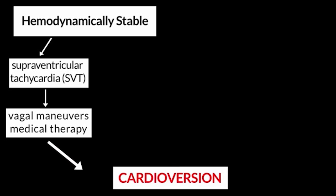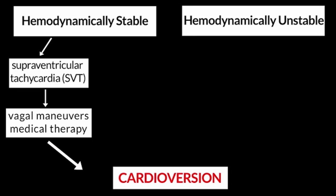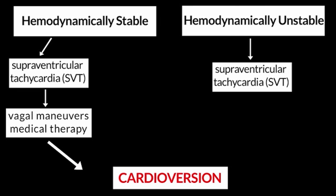If a patient presents and is hemodynamically stable — for instance, with a re-entrant supraventricular tachycardia — then clinically the appropriate next step would be to attempt vagal maneuvers and medical therapy before considering cardioversion. In a hemodynamically unstable patient with SVT, you bypass those earlier steps and proceed directly to cardioversion.